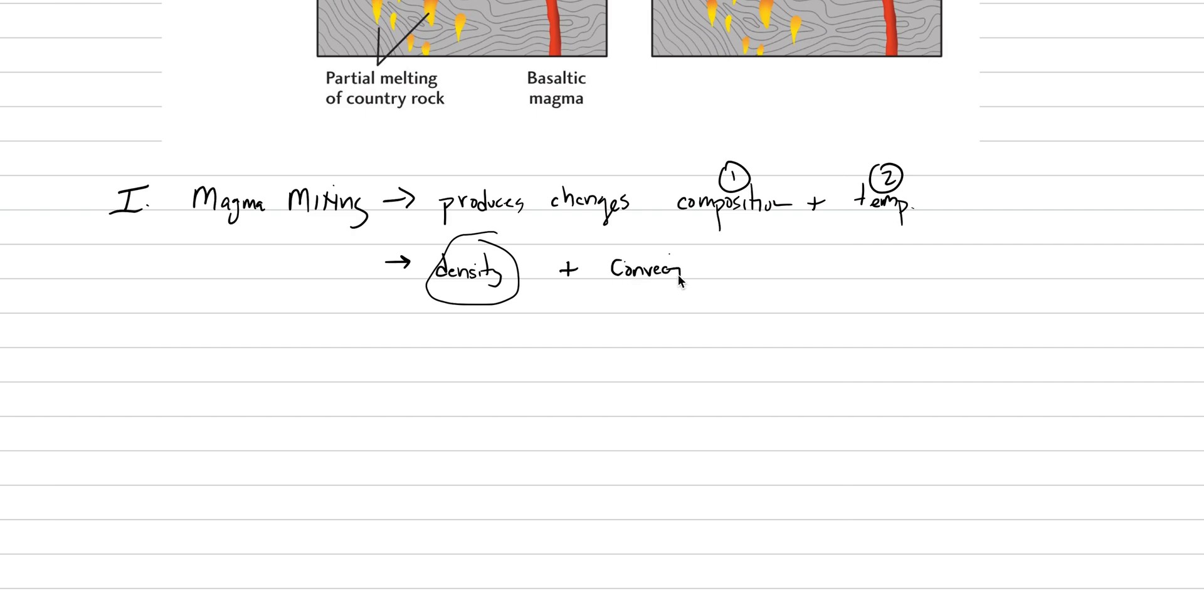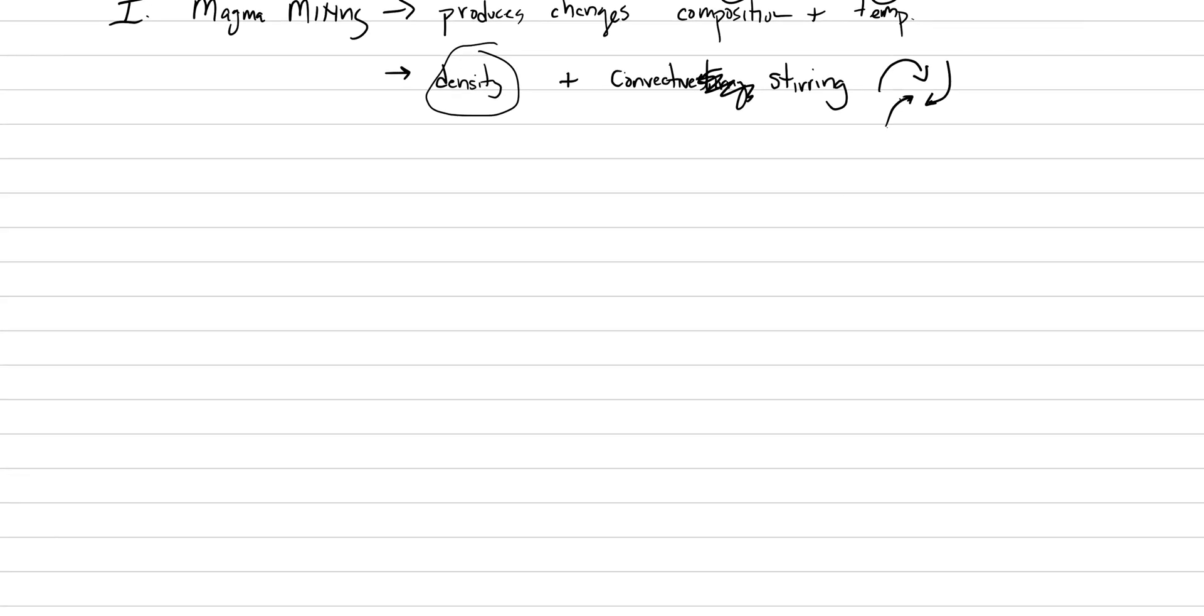As well as convective stirring. These are the two processes that are going to allow magma—convective stirring. These are the things. If we have convective stirring, we can mix magmas together. If we don't have good density change and if we don't have convective stirring, then we won't actually get magmas to mix efficiently.